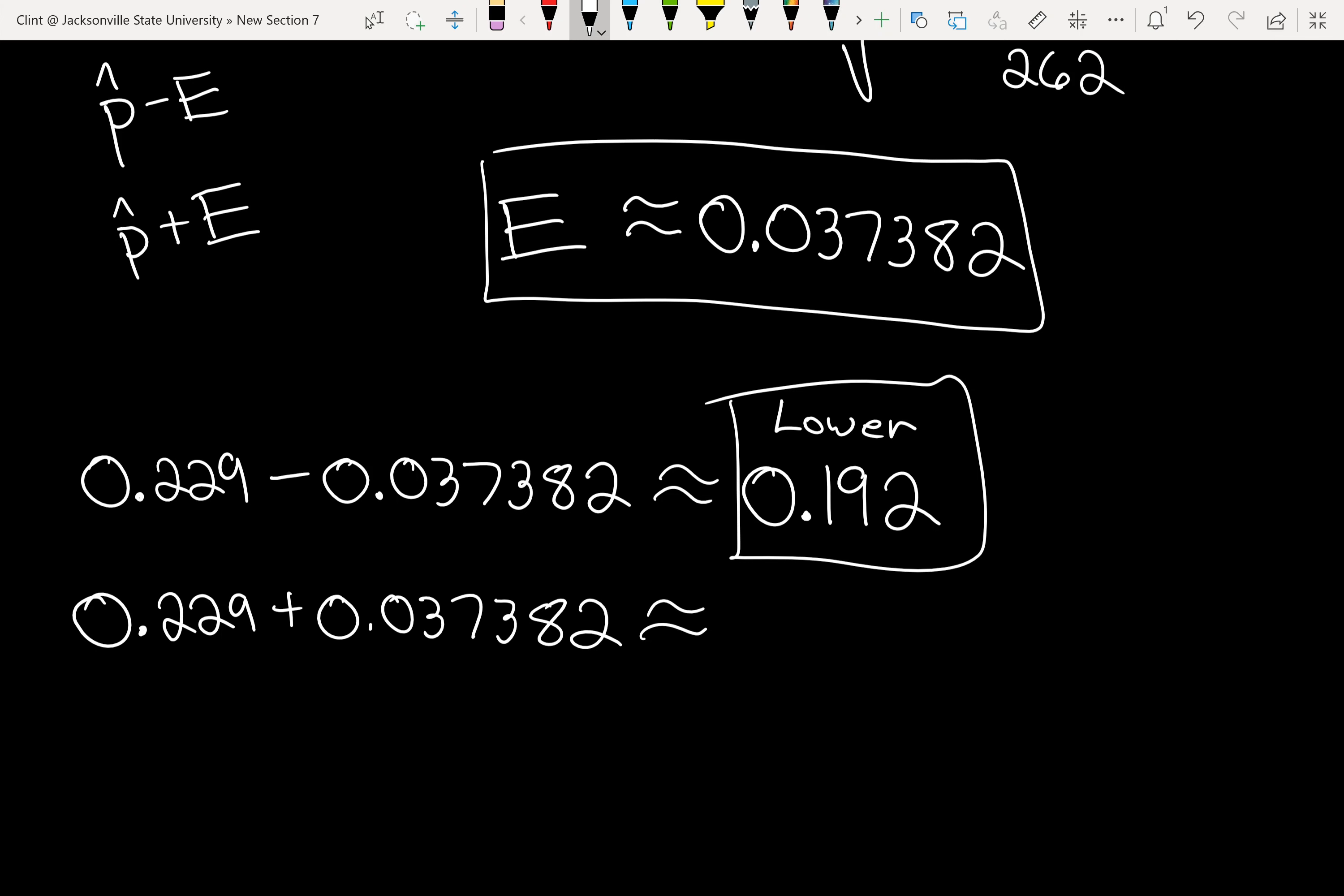And then we'll do the same thing, but we add 0.229 plus our margin of error. So there, 0.229 plus the big long number, 0.037382. And this time we get 0.266 when we round. So this is the upper endpoint. Those will be our two answers on step two. Those are the numbers for our interval.